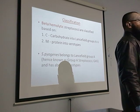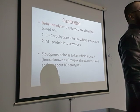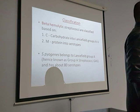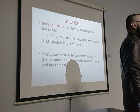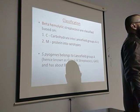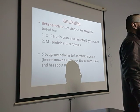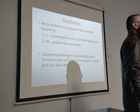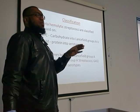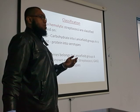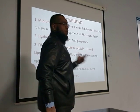Within Group A, bacteria are divided into serotypes based on Protein M — different antibodies are produced for each serotype. Streptococcus pyogenes is beta-hemolytic and belongs to Group A, so it is also known as Group A Streptococcus. The terms Group A Streptococcus and Streptococcus pyogenes refer to the same organism.